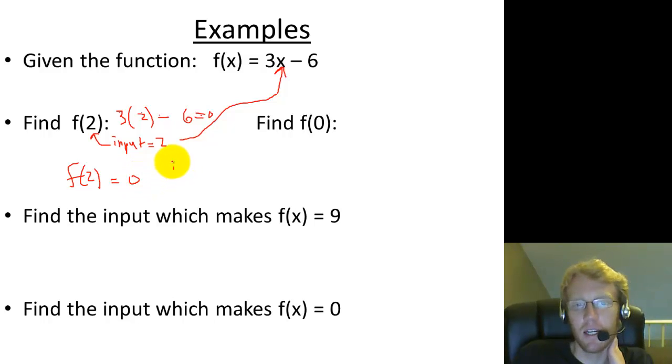So f of 2 equals 0. What that means is that when the input is equal to 2, the output is equal to 0. So an input of 2 gives an output of 0. If you were to graph this, it would be the point 2 comma 0 on a graph.